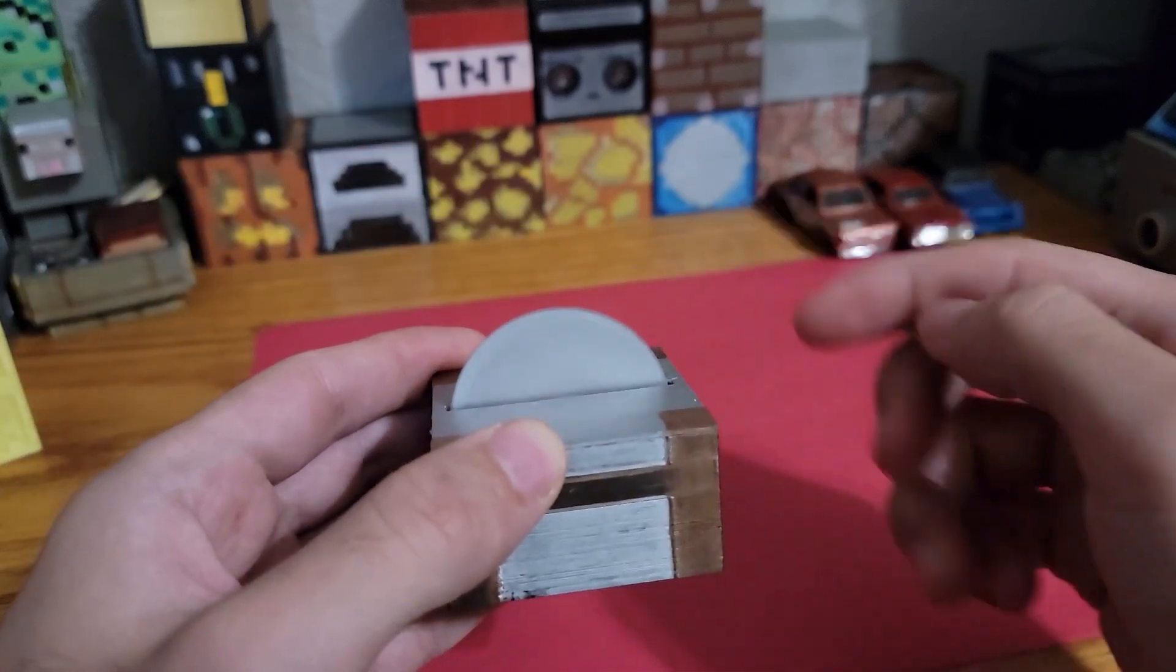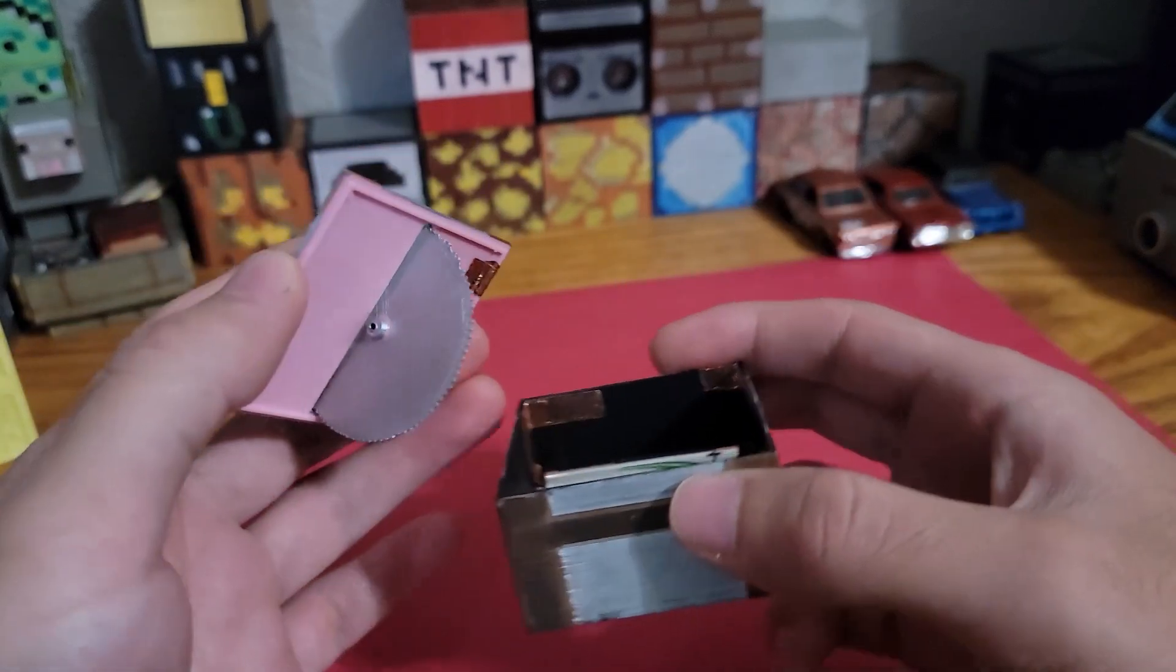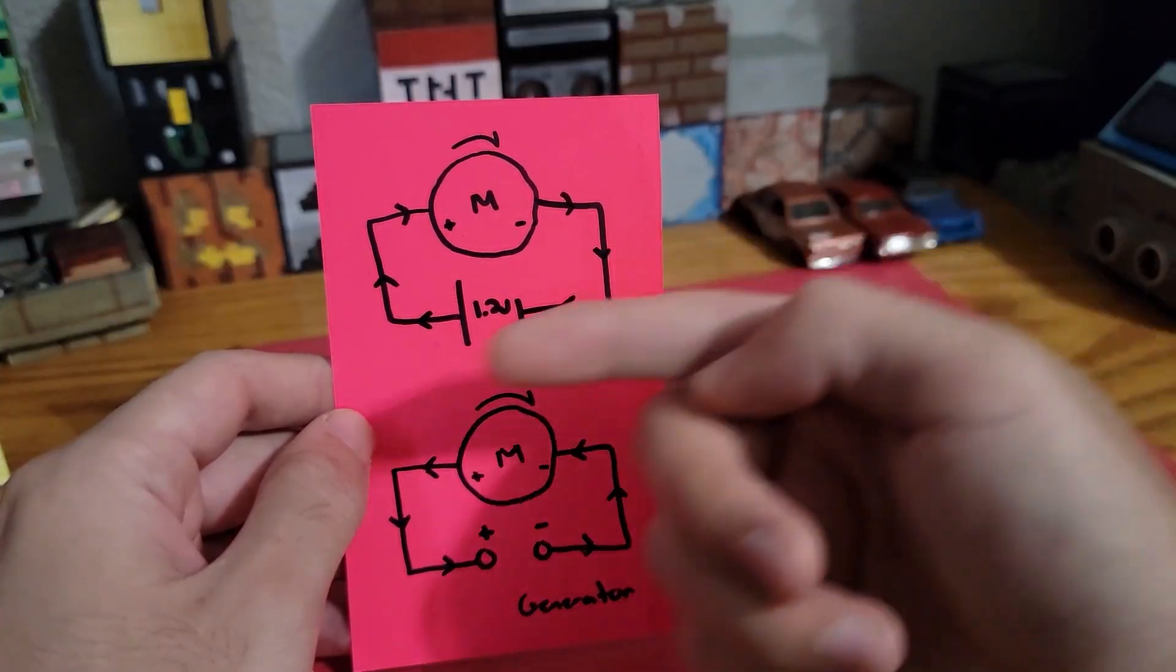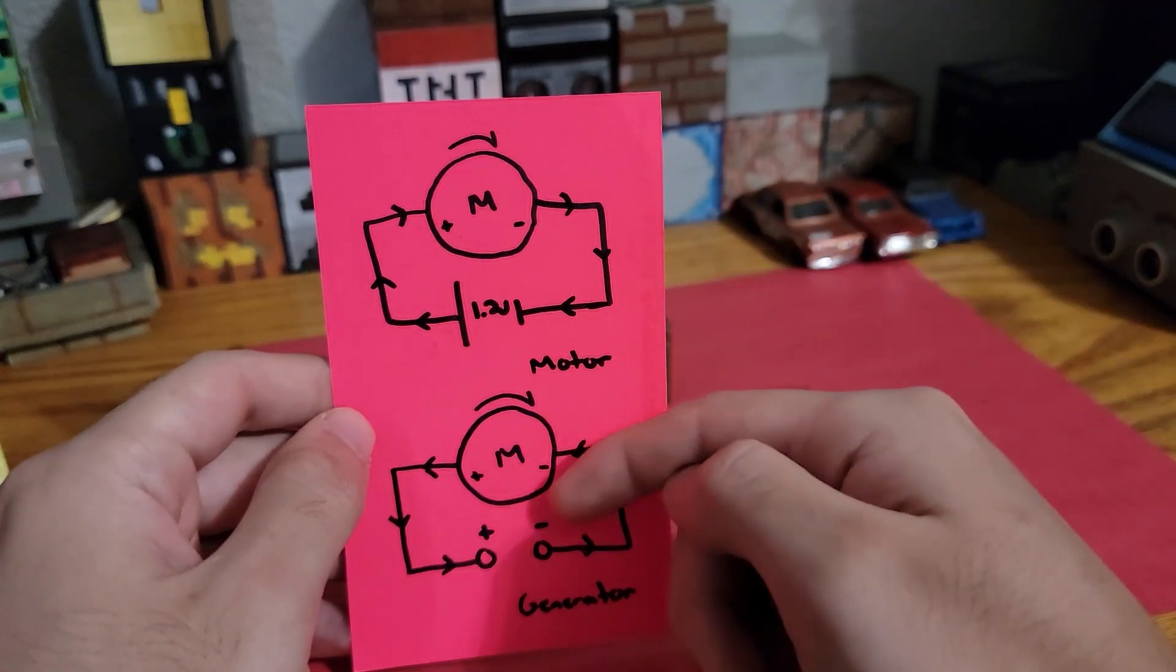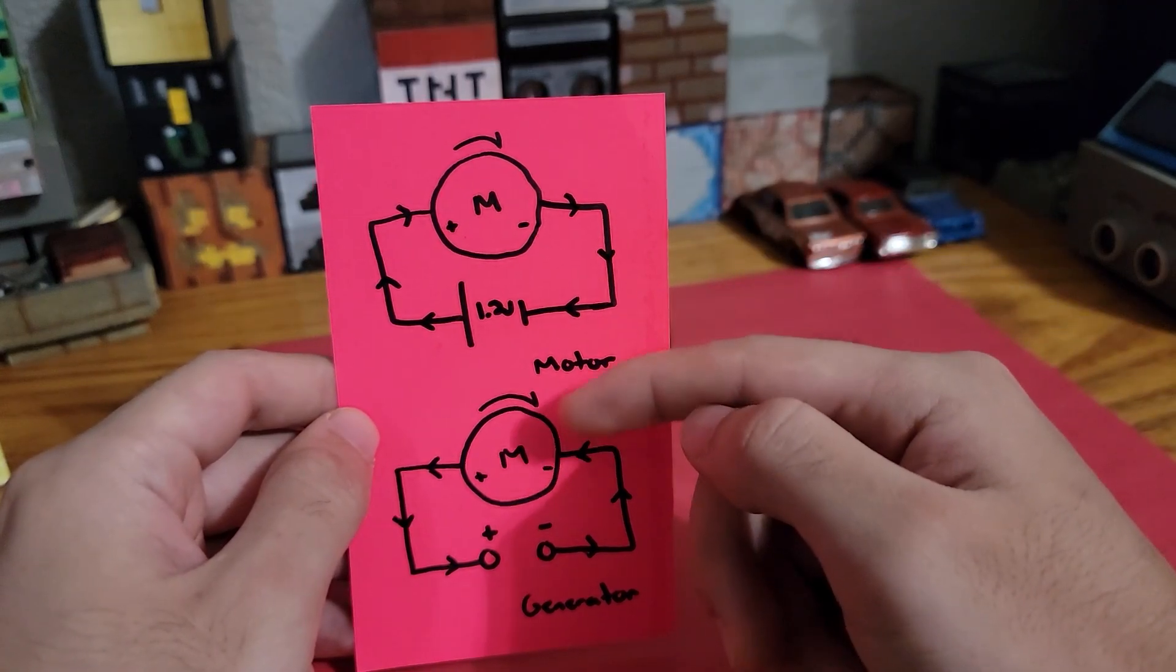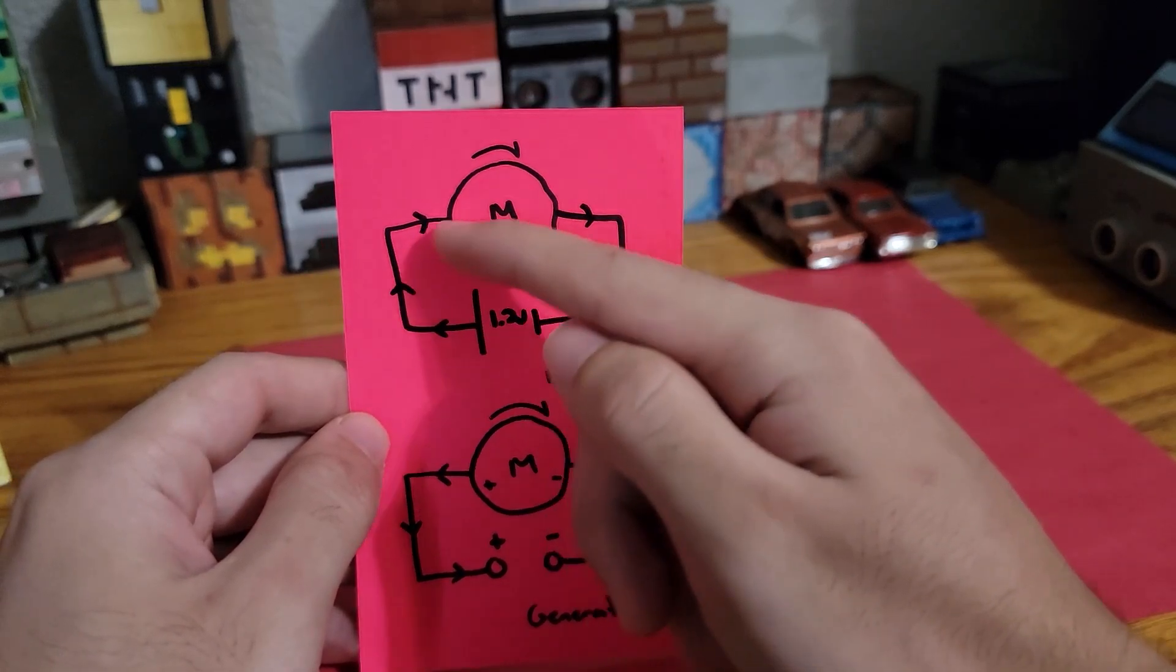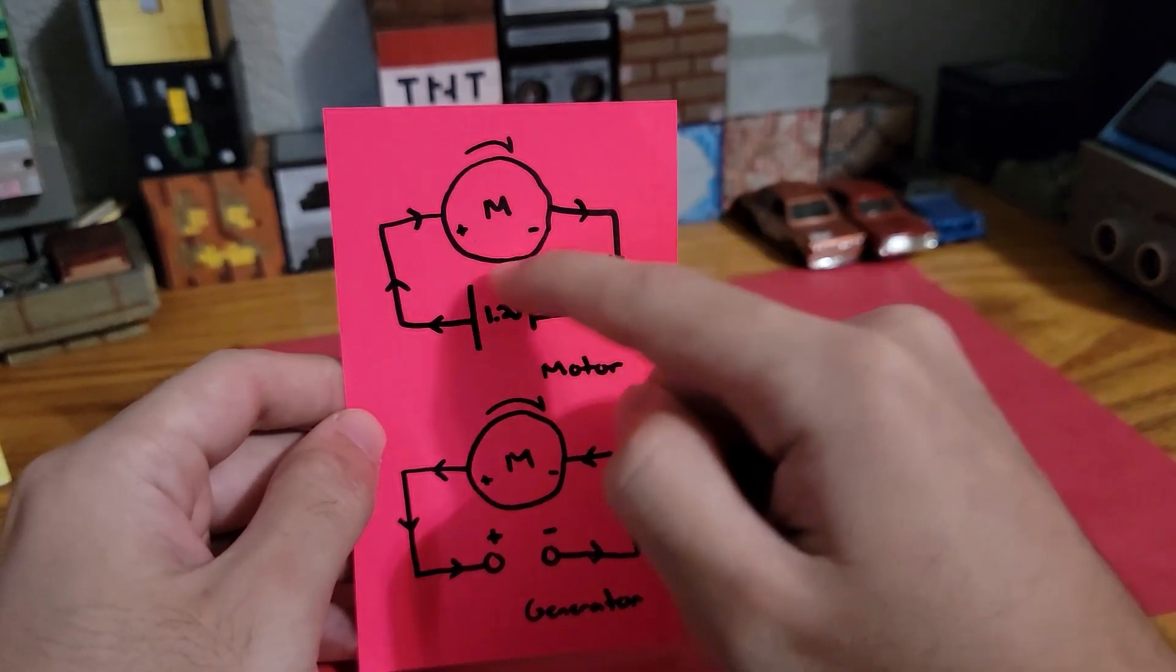If these wires were flipped it would go counterclockwise. Here I've drawn up a little diagram to visualize how the current moves and how the direction flips according to Lorentz force law. Here on the top it's being used as a motor, so current is being supplied. When it runs through the motor it spins clockwise.